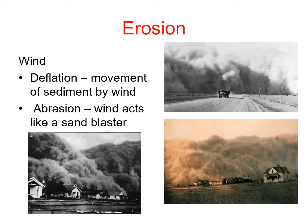I wanted to mention really quick the Dust Bowl. This is an example of deflation — deflation is when there's a huge movement of sediment by wind. Due to poor farming practices, back in the 30s during the Depression, stuff stopped growing because they were overusing the soil and weren't returning nutrients to it. There was also a drought, so they weren't able to grow any crops. These windstorms would come through and moved all the sediment — we call that the Dust Bowl. You can see in the pictures that deflation happening, that large movement of sediment.